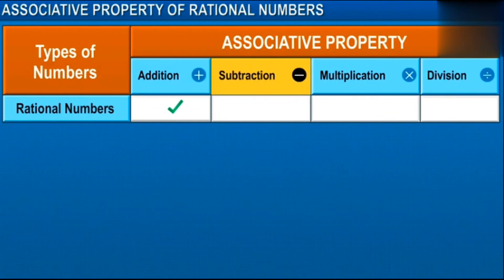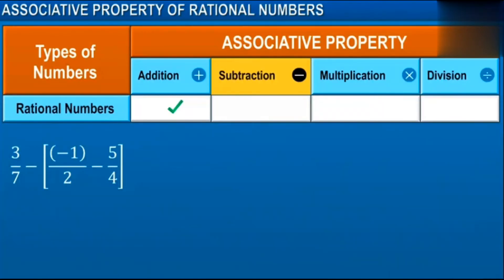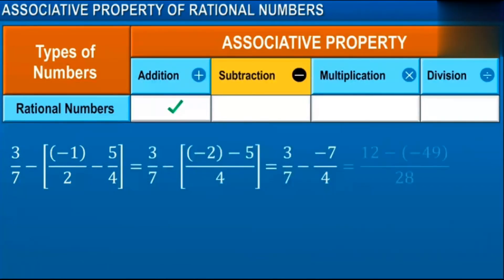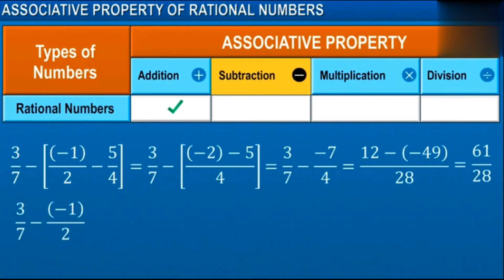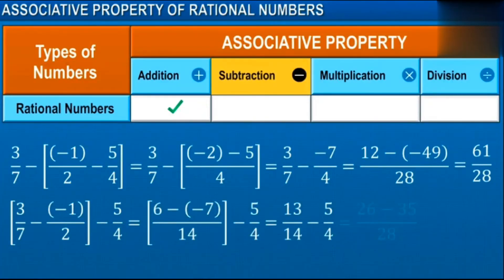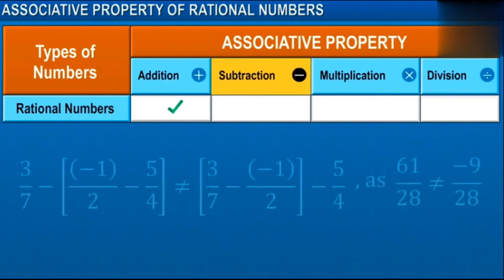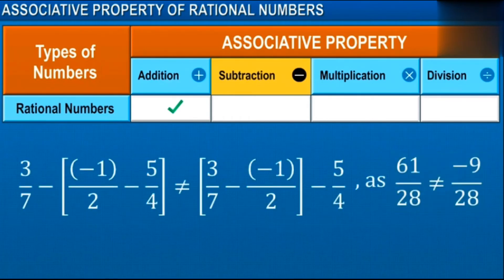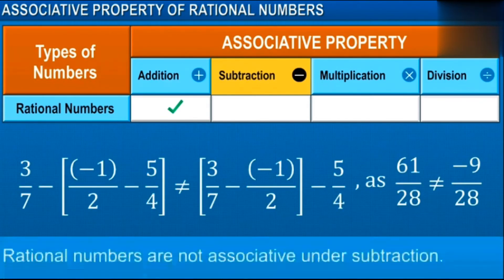Let's see for subtraction. For the same three numbers, when we subtract the third number from the second number and then the result from the first term, we get 61 upon 28. And when we subtract the second number from the first number and then subtract the third number from the result, we get minus 9 upon 28. Here we see that the results are not the same. Therefore, rational numbers are not associative under subtraction.